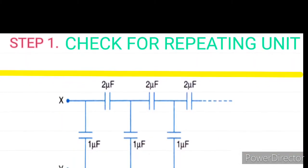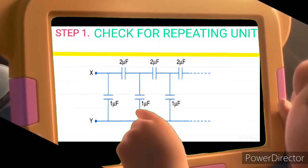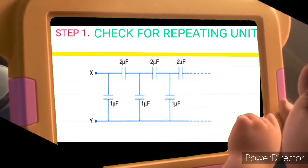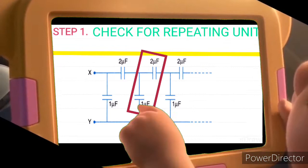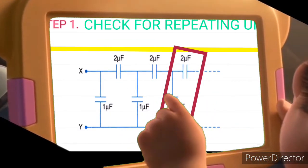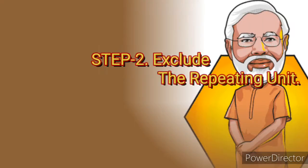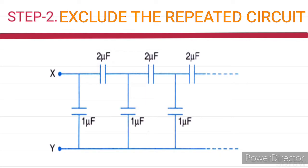By observing carefully, we are able to evaluate that the repeating units are 1 microfarad and 2 microfarad. Now the second step is to exclude the repeating units, but we have to leave alone a single unit.